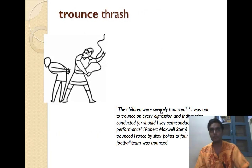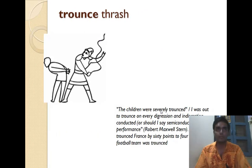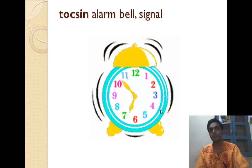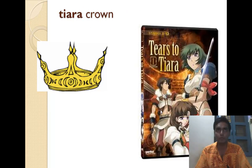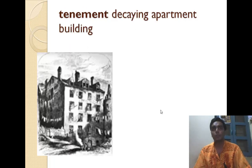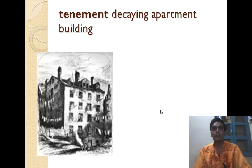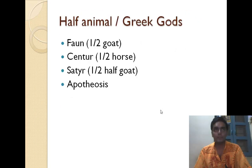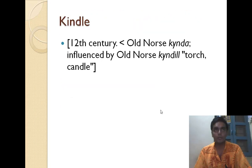Trudge means to march, slog, and walk heavily. Tonal is pertaining to sound. Toxin — bell. Tiara is crown. Terpsichorean is related to dance. Tenement is a decaying apartment.